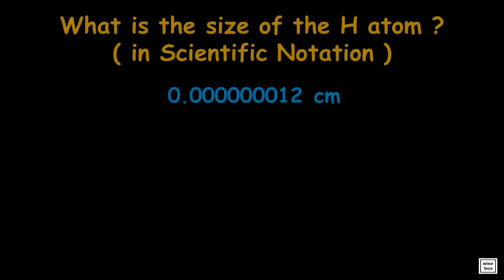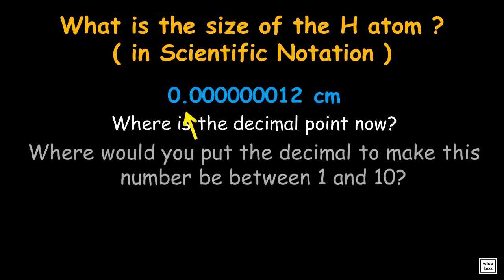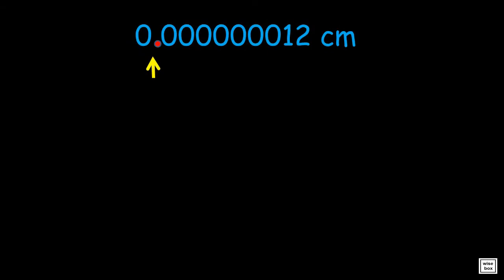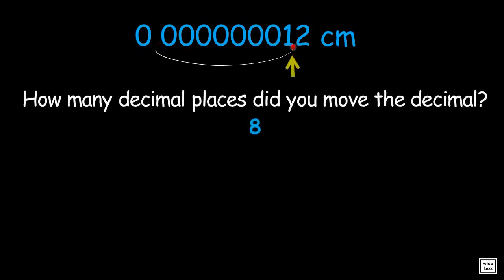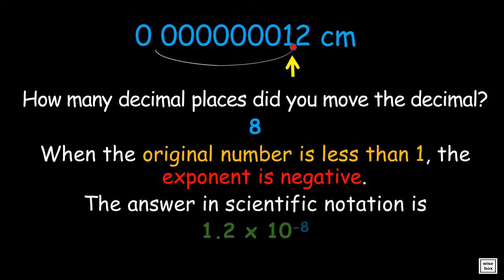Going back to the size of the hydrogen atom, note where the decimal point is. To make this number between 1 and 10, we have to move the decimal point between 1 and 2. What we did is move the decimal point 8 places. And since the original number is less than 1, the exponent in the scientific notation must be negative. Thus, the answer is 1.2 times 10 to the power negative 8.